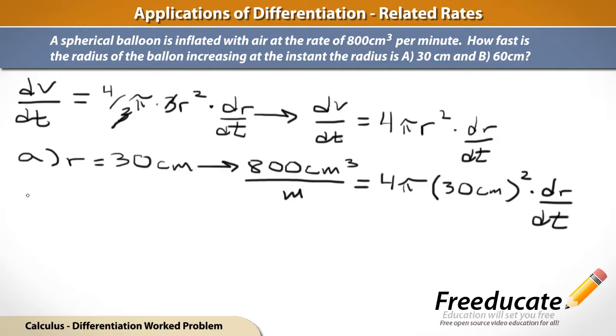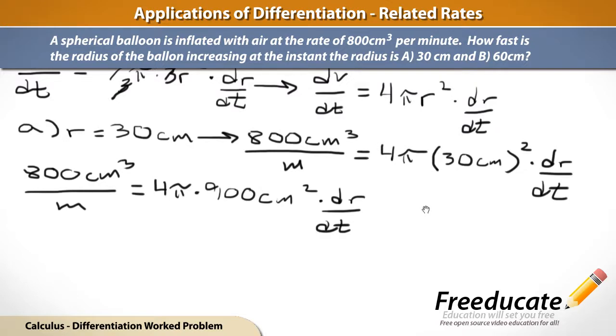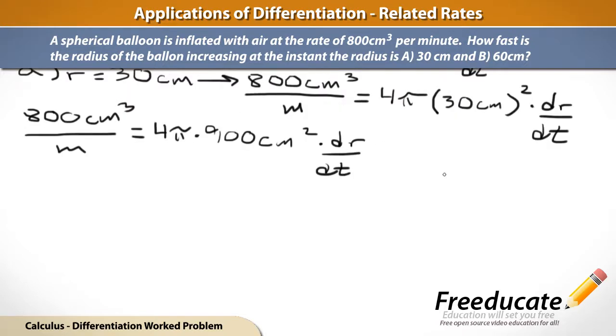So, again, we have 800 cubic centimeters per minute is going to equal, okay, 4 pi, 30 centimeters. That quantity squared is going to be 900 square centimeters. And then times dr/dt. Alright. So, if we want to solve for dr/dt, we need to multiply—I'm sorry, not multiply. We need to divide both sides of this equation by 3600 pi centimeters squared.